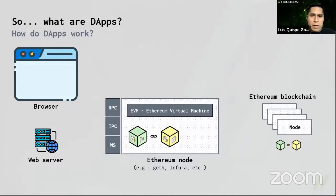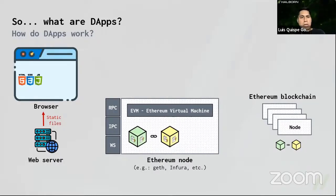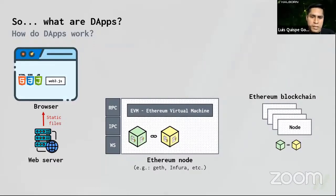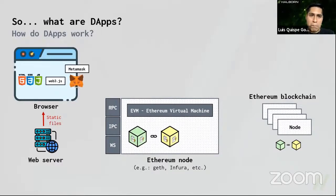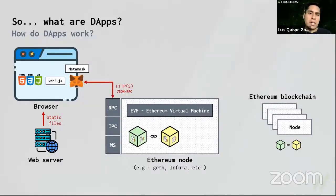Now let's see it in action. The browser retrieves static files — HTML, CSS, JavaScript — from the web server. One popular JavaScript library is web3.js, which allows you to create and build transactions. But remember, before sending a transaction you have to sign it. So you use a plugin like Metamask, which stores and manages your private key, to build and sign the transaction. Then you send it to the Ethereum node through a protocol like HTTP or HTTPS.